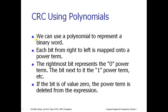We can use a polynomial to represent a binary word. Each bit in a polynomial from right to left is mapped onto a power term. The rightmost bit represents the zero power, and the bit next to it is power 1, and so on. If the bit is of value 0, the power term is deleted from the expression.